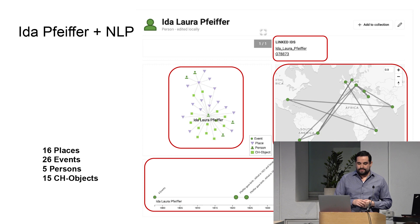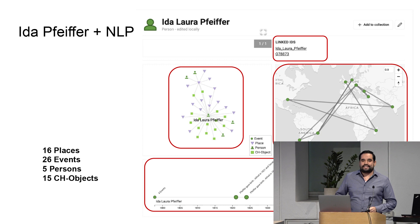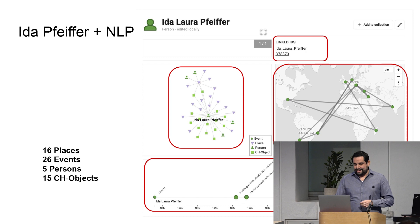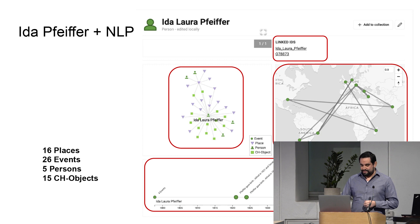The answer is yes. Here is the output of the NLP already displayed in the Intavia interface. There is a link to her Wikipedia biography and also the Wikidata entry. Here is a richer network — now we have more places and people involved. The map looks much better. Yes, she was a world traveler. She went to Madagascar, she went to New Orleans, India, et cetera.